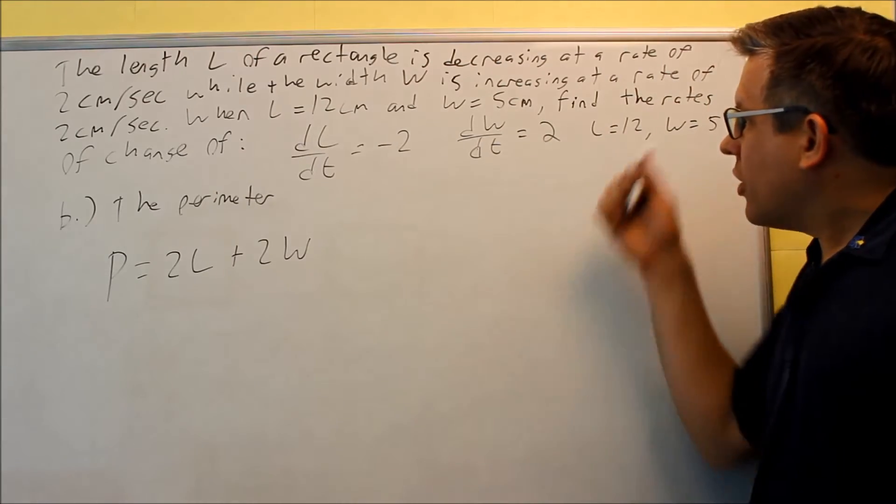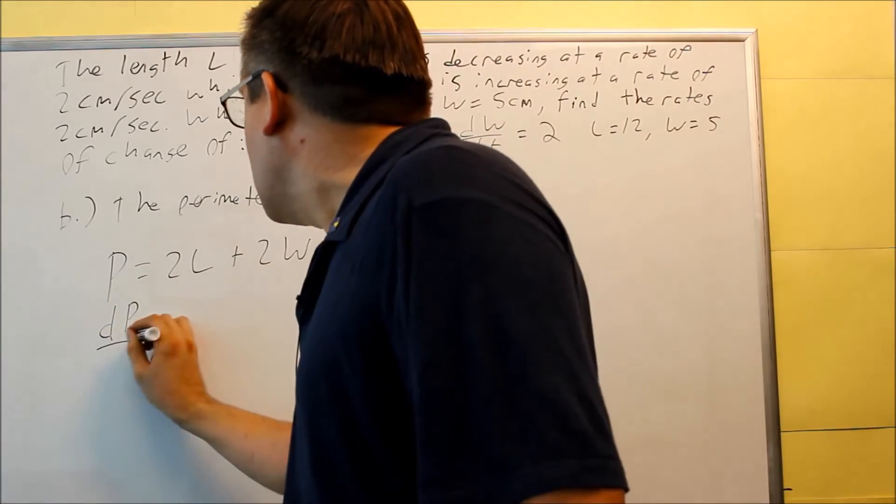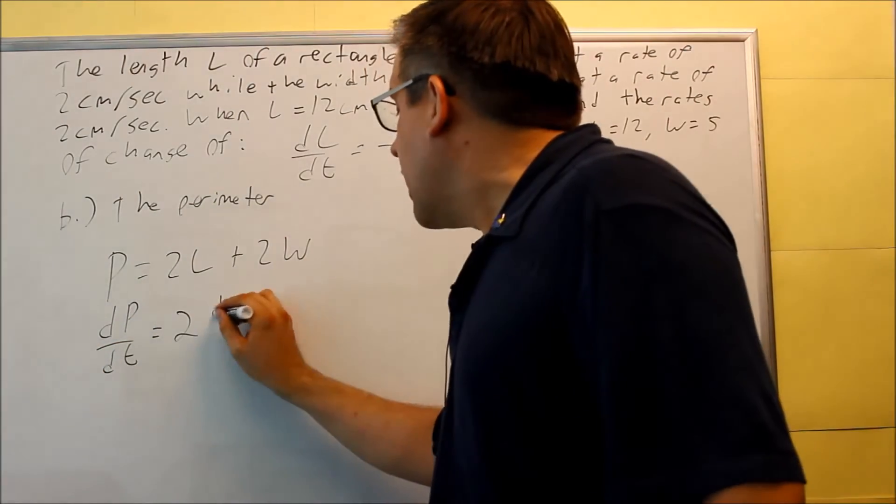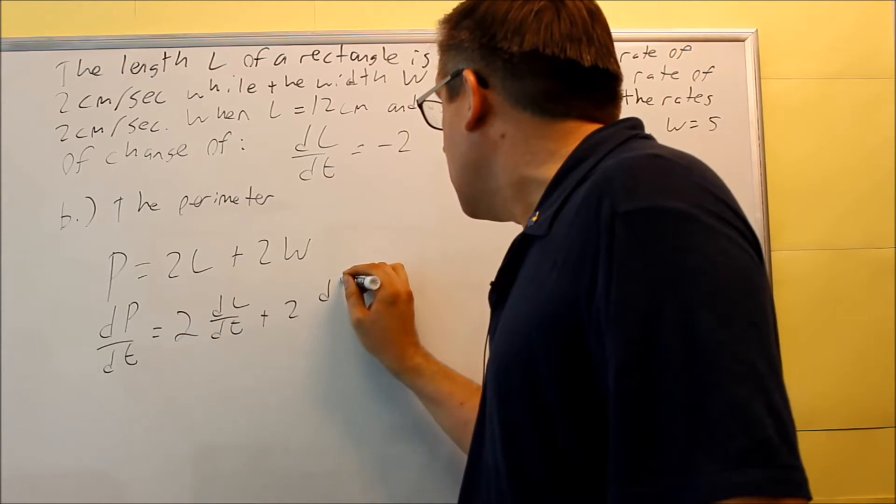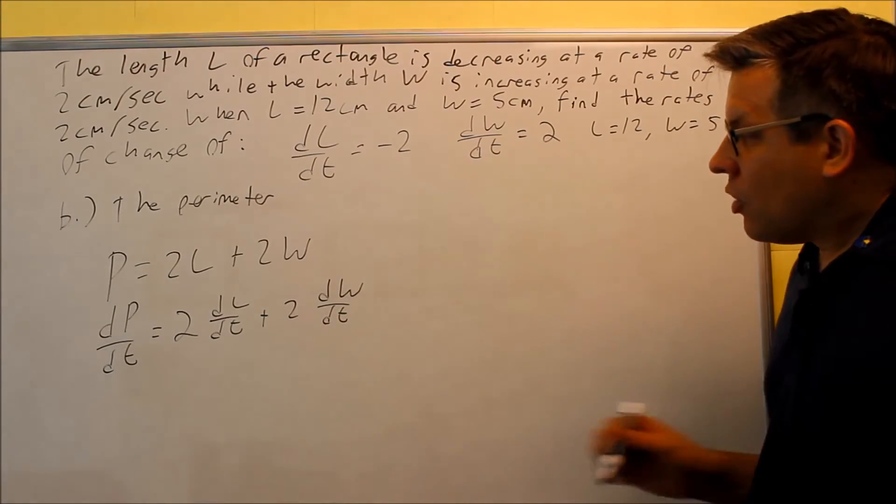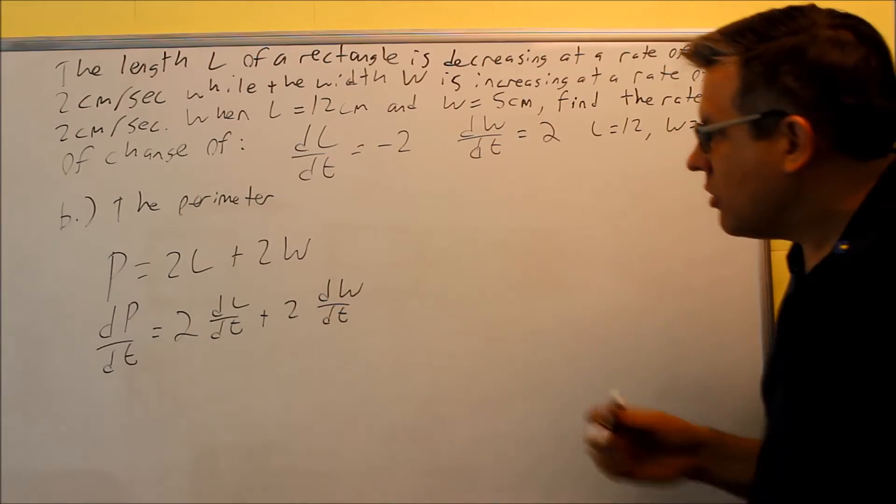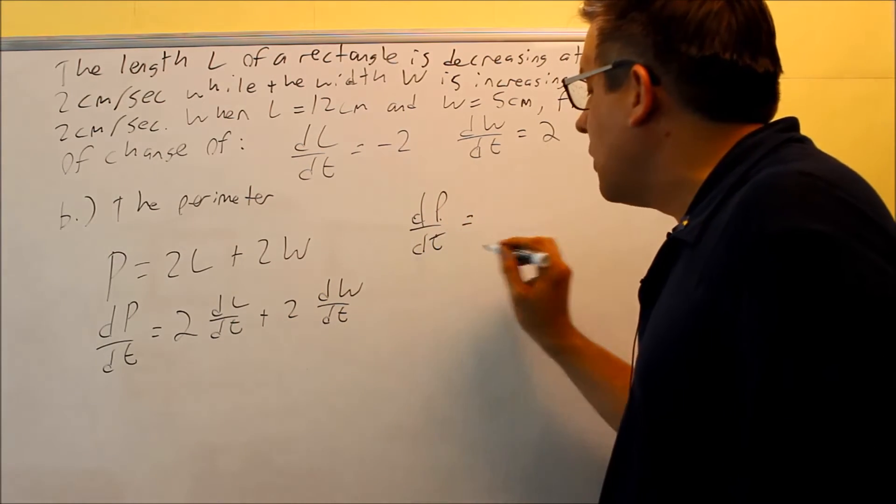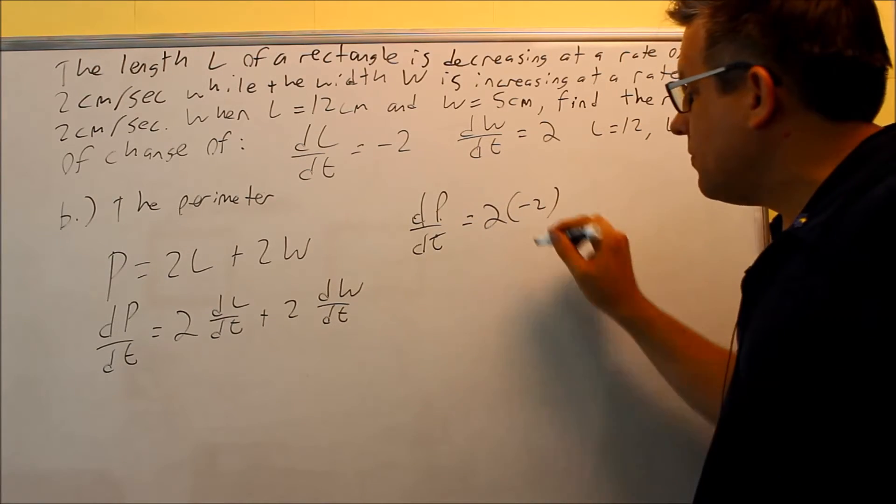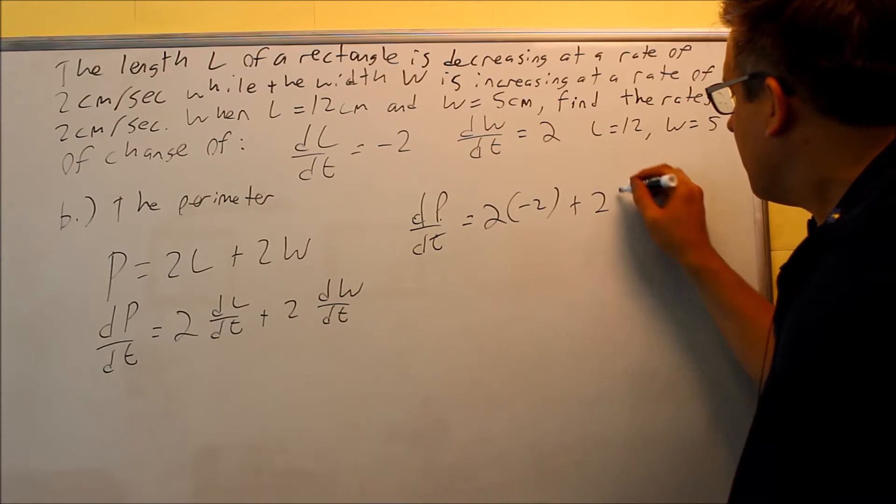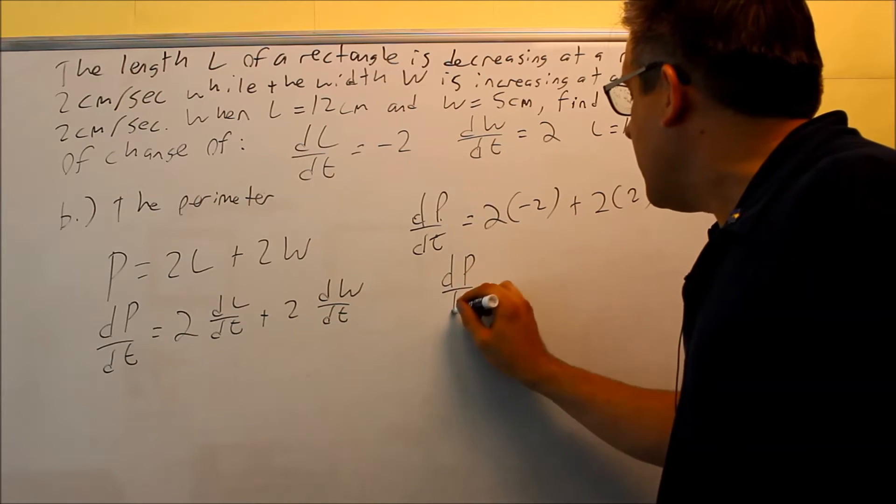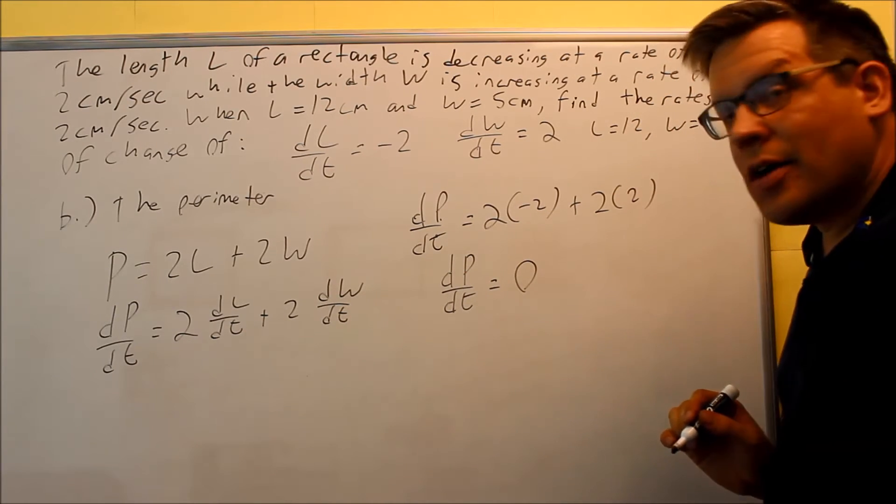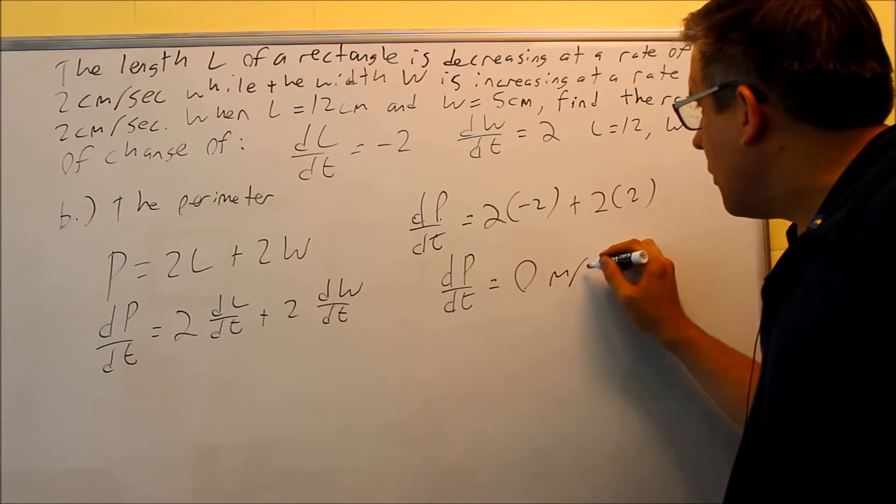We're going to do the derivative of both sides. We want to find the rate of change of the perimeter, that is dP/dt, and then we'll do the rest of it: 2 dL/dt and then 2 dW/dt. We have all this information provided, just plug it all in to get the answer. dP/dt is going to equal 2 times dL/dt is negative 2, and then 2 times dW/dt is 2. dP/dt, I get negative 4 plus 4, that gives me 0, and that would be in terms of centimeters per second.